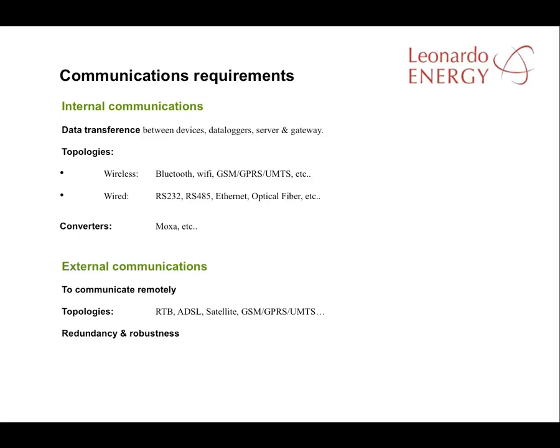When considering solar plant communications, we have to consider two types: internal and external. Internal communications are between devices, data loggers, and elements within the PV facility, while external communications are between our main office and the outside world. For internal communications, we have to decide between wireless and wired topologies; wired systems are recommended. The most commonly used are RS-485 and internet systems. Converters can be used to change one signal to another. It is typical to use optical fibre running from the control room to the different areas across the site, and then to use a converter to get the data gathered from the RS-485 bus and convert it into an optical fibre bus.